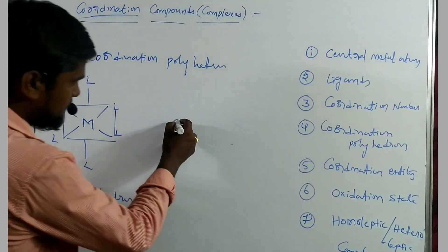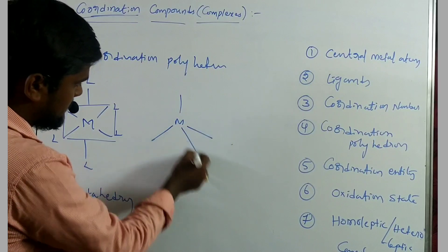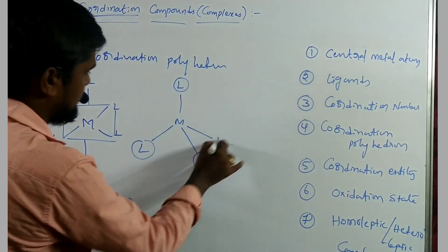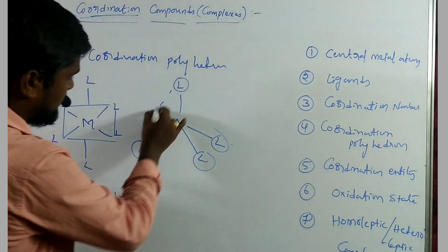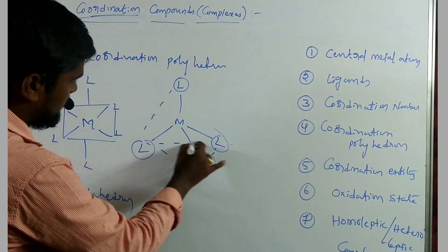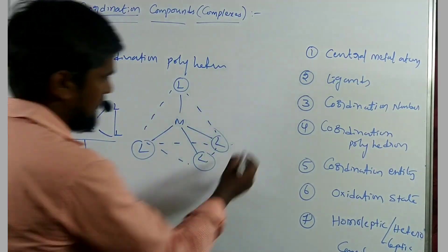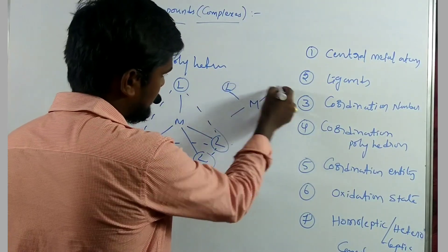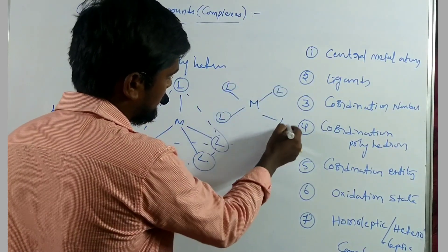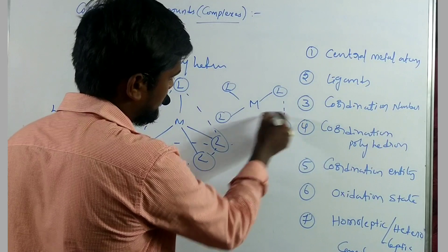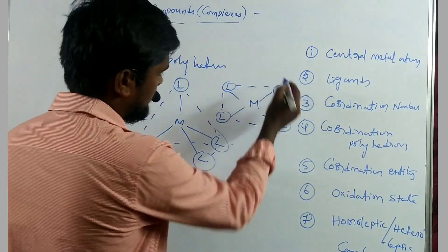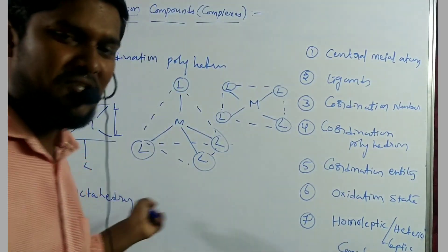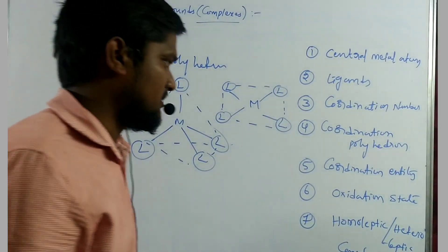Another coordination polyhedron is the tetrahedron — having four ligands. Another one is square planar. Several types of polyhedrons are present, but these three are generally used in coordination chemistry.